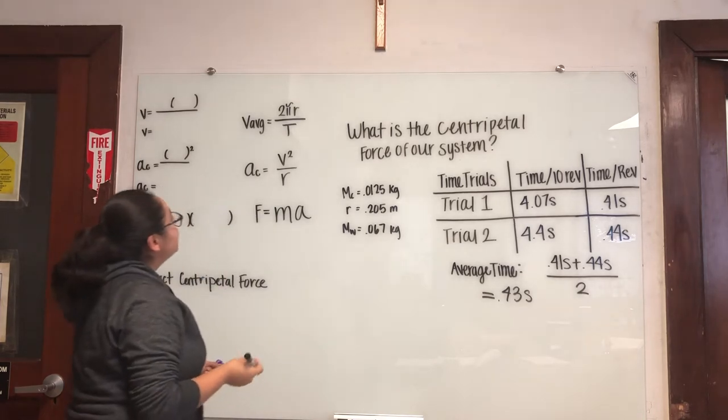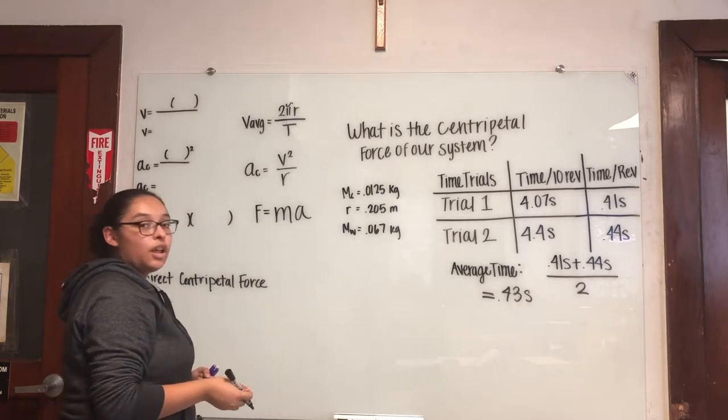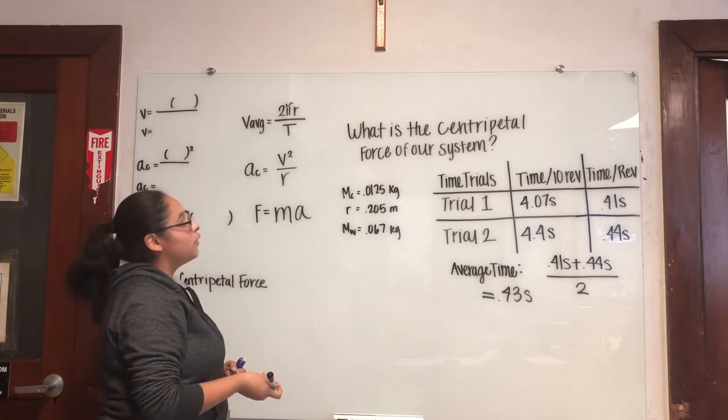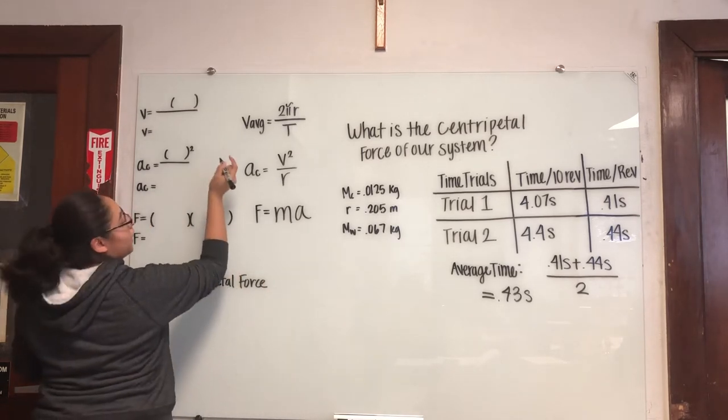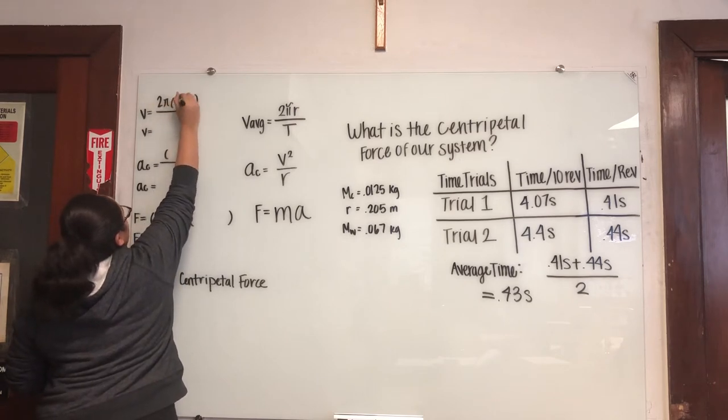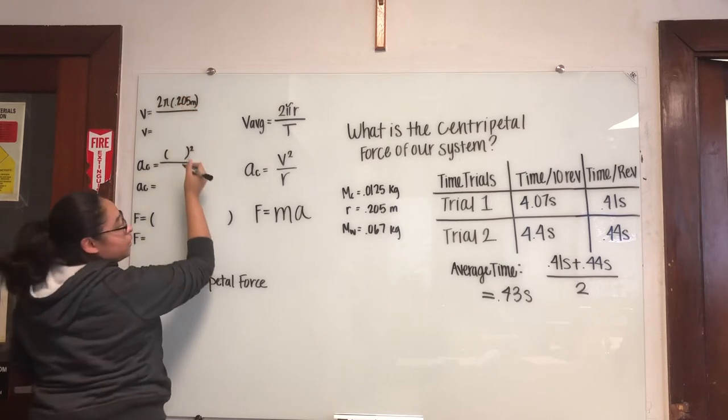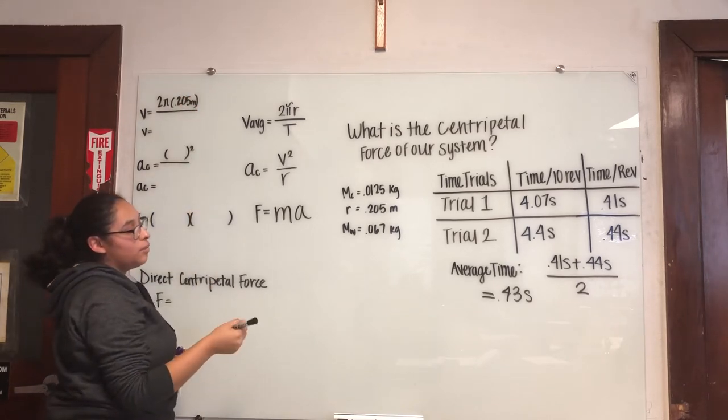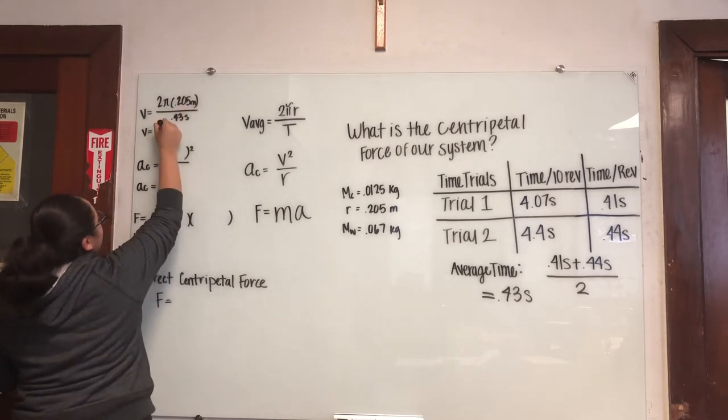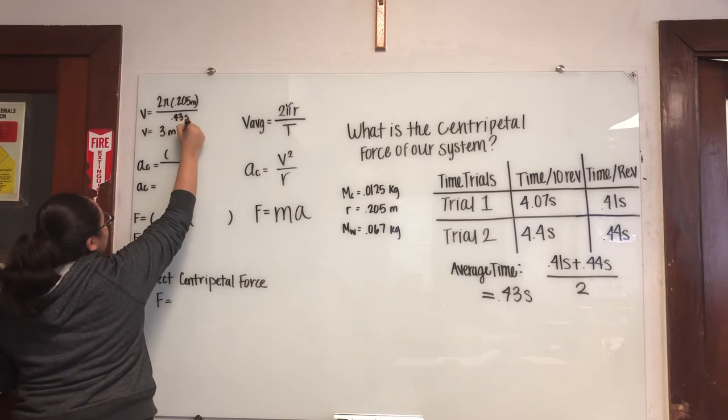So first we had to find our average velocity. And to do that we used the equation 2πr over t. So we had to plug in our radius and we used 0.43 seconds from our average time. And we got 3 meters per second.